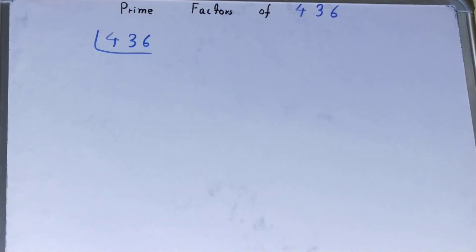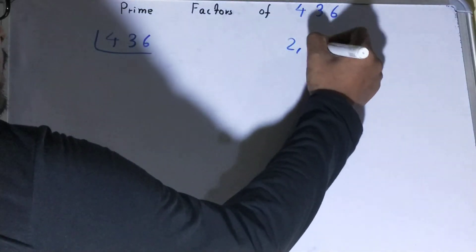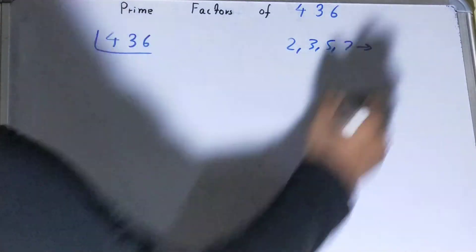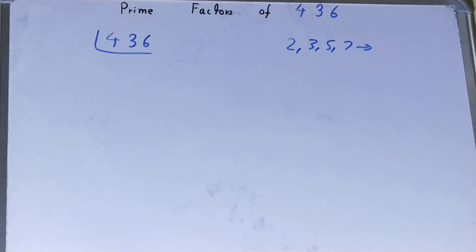Before solving this any further, you must have an idea about what prime numbers are. Prime numbers are numbers that are divisible by one and the number itself, like 2, 3, 5, 7, and so on. We're going to start with the lowest prime number.